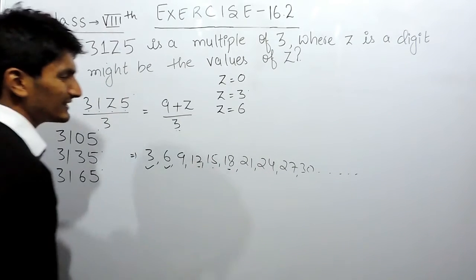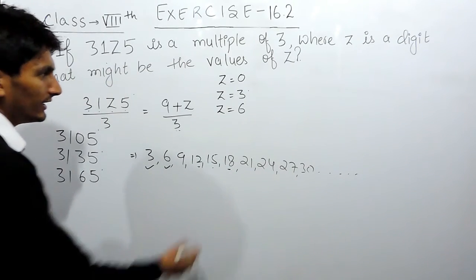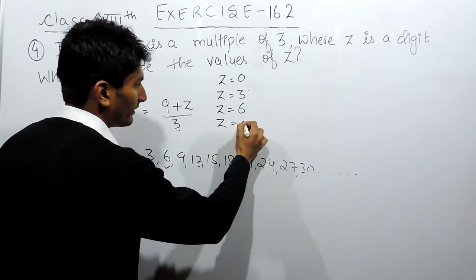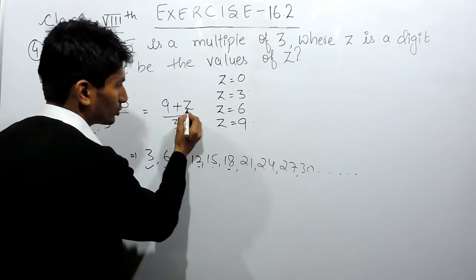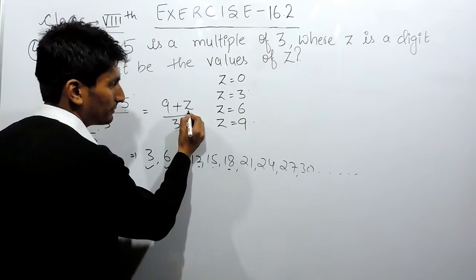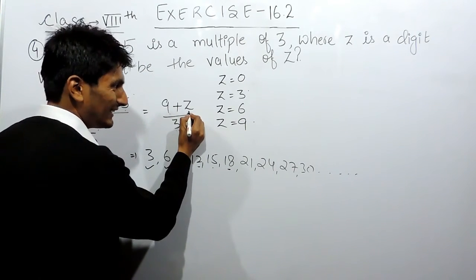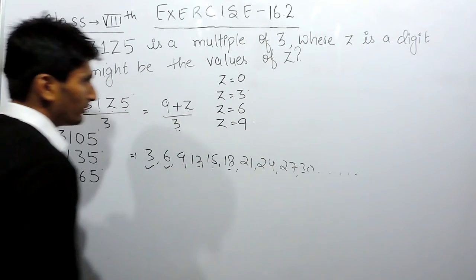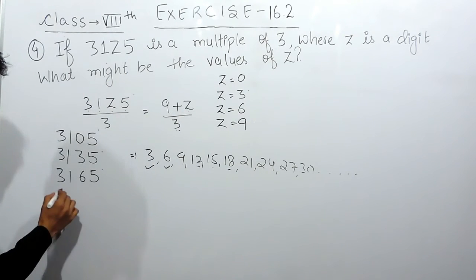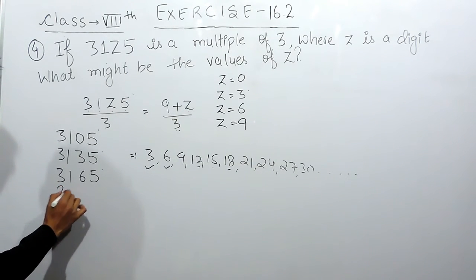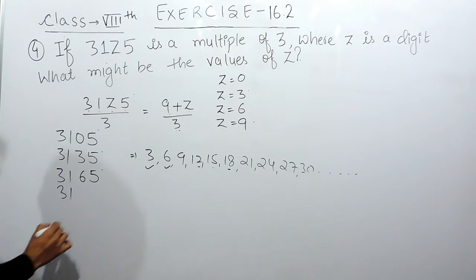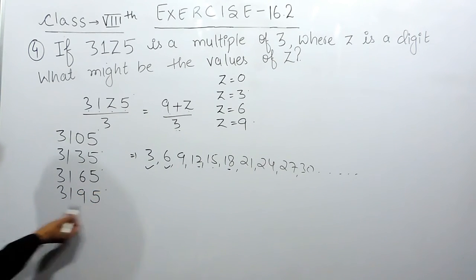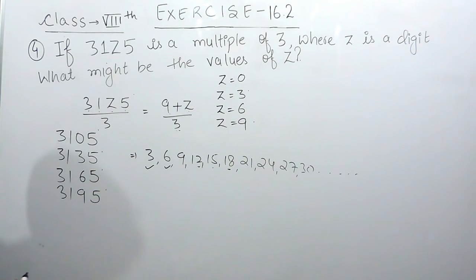Now, I have to make this sum as 18. In that case, if I substitute the value of z as 9, this will be 9 plus 9 equals 18, which is again divisible by 3. So the fourth value of z for which this complete number is divisible by 3 gives us the number 3 1 9 5.